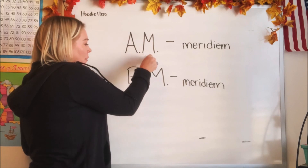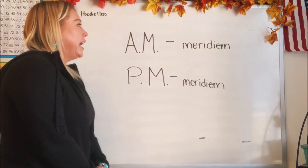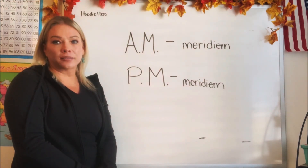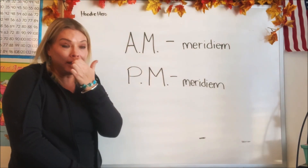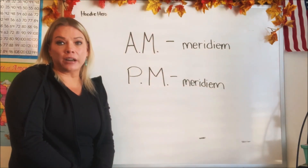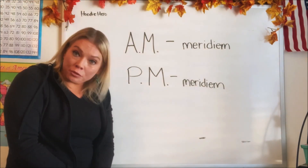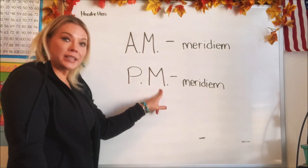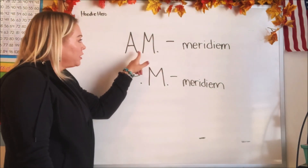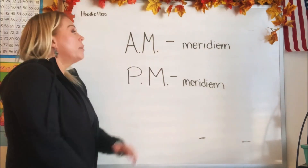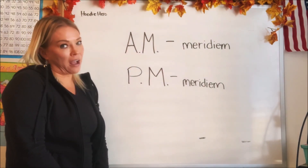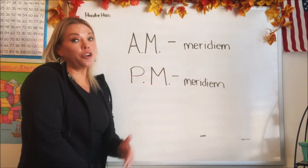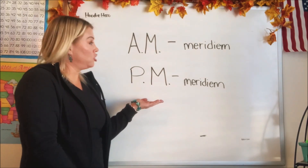I wrote the a.m. and the p.m. down, and I want you to tell me what you see after each of those letters. What is that? It's a period. Do you know what that means when there's periods after a letter? It means it's an abbreviation for something. So each letter stands for something, but it would take a long time to write that all out, so we just say a.m. or p.m. It's just an easier, quicker way to say it — it's an abbreviation.